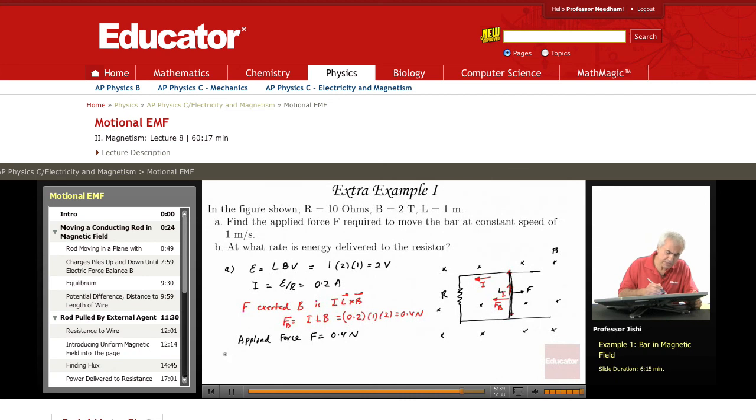And now at what rate is energy delivered to the resistor? That is the power. The power is the rate at which energy's delivered. For a resistance R, the power is just I squared R. Since I, the current, is 0.2 amperes, 0.2 squared times R is 10 ohms, and so this is 0.4 watts. This is the power delivered to the resistance.